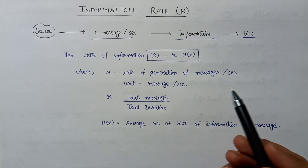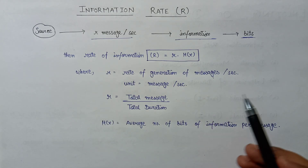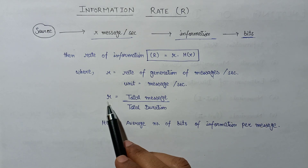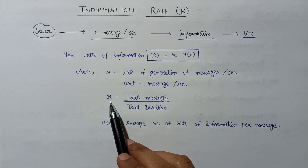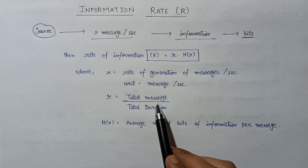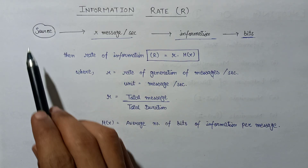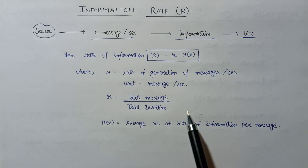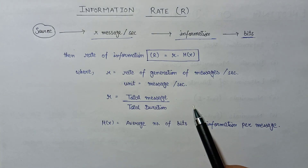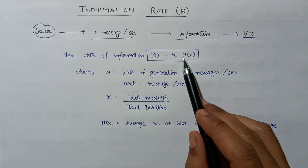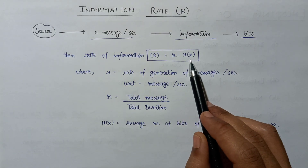Sometimes we want to calculate the value of small r when solving numerical problems in upcoming lectures, so we require a formula. Small r can be calculated as the total number of messages emitted by the source over the total duration required by the source to emit those messages.